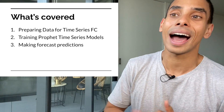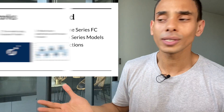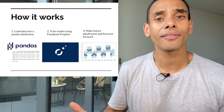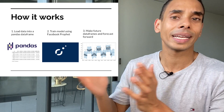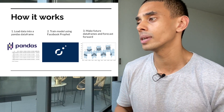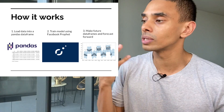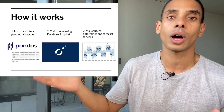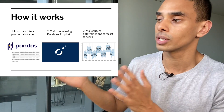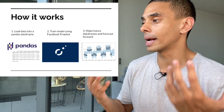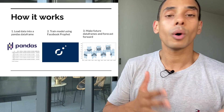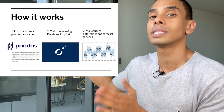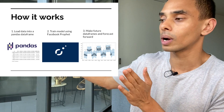First, we're going to load our dataset into a dataframe using the pandas read_csv function. Then we're going to build our model using Facebook Prophet, which allows us to accelerate the time to building a time series forecast model — it's really easy to train. Then we're going to create some future time periods and actually forecast forward.